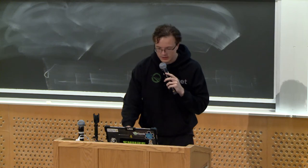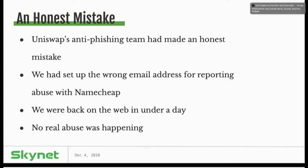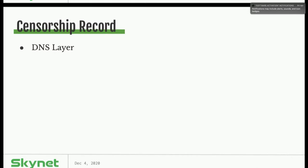It was an honest mistake — Uniswap was not trying to demolish decentralized front-ends, but they'd nonetheless killed us. Simultaneously, we had set up the wrong email address for receiving reports from Namecheap, so the abuse reports were actually going to Google. We got everything sorted, we were back on the web in under a day, and the abuse wasn't real. So we kept going on. We did get pulled from the DNS layer, but the first time it happened, it was just an honest mistake.